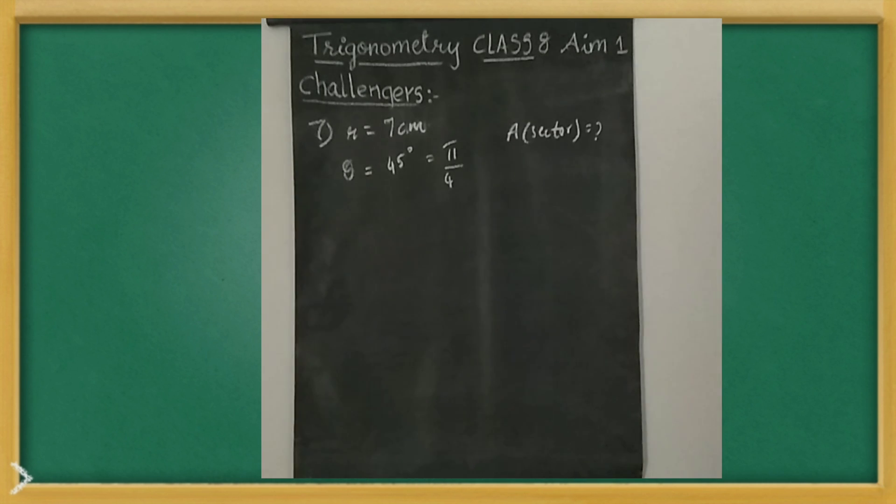With this we completed 6. Now we'll do 7. The 7th question, the radius of the circle is 7 centimeters. The angle is subtended by an arc of the circle at center is 45 degrees. Then you have to find the area of sector. You all know what is the sector, right? For that you have to find the area.